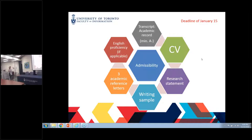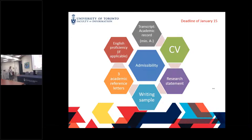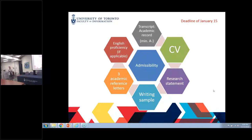A writing example is required — a thesis you have done before, any publications you might have made, a book chapter, or an article you have published or submitted. It should be about 5,000 to 10,000 words. Three academic references are also needed — someone who can speak to your research competence. We are looking for academic references; however, if you have been out of school for more than five years in an academic working sense, one of the references could be a work reference.